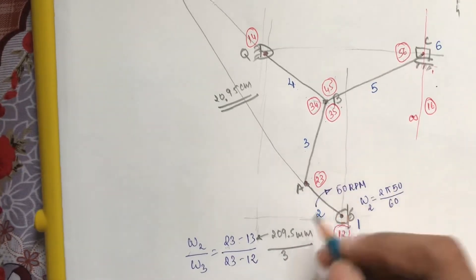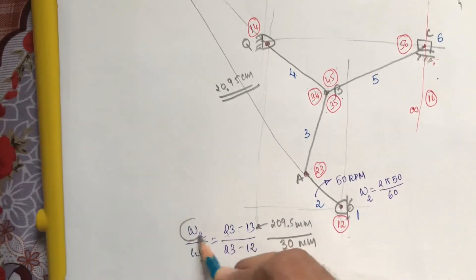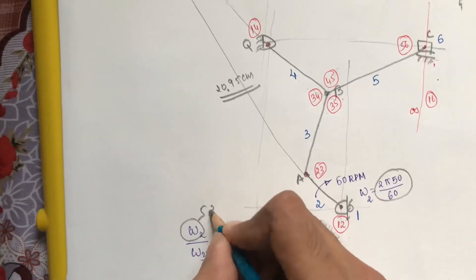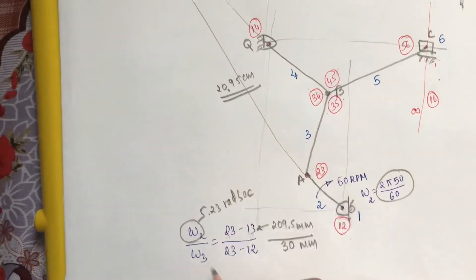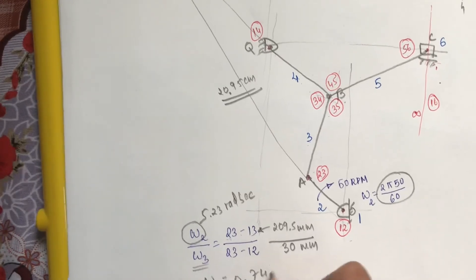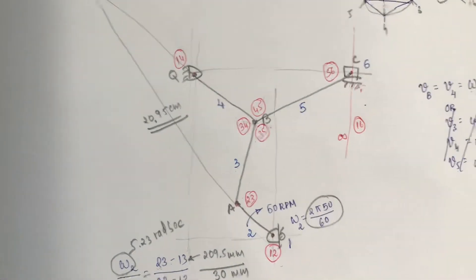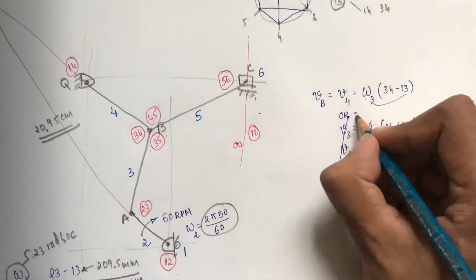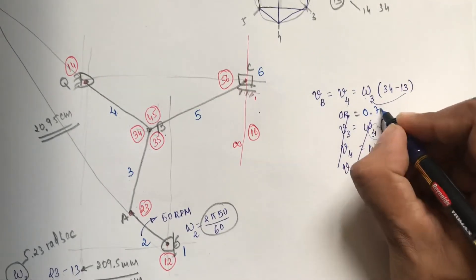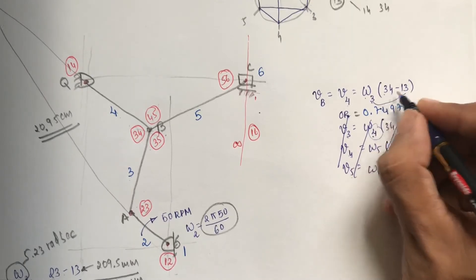With the original dimension of 30 mm for IC 1-2 and omega_2 = 5.23 rad/s, we calculate omega_3 = 0.749 rad/s. This value of omega_3 will be used in the velocity formula.